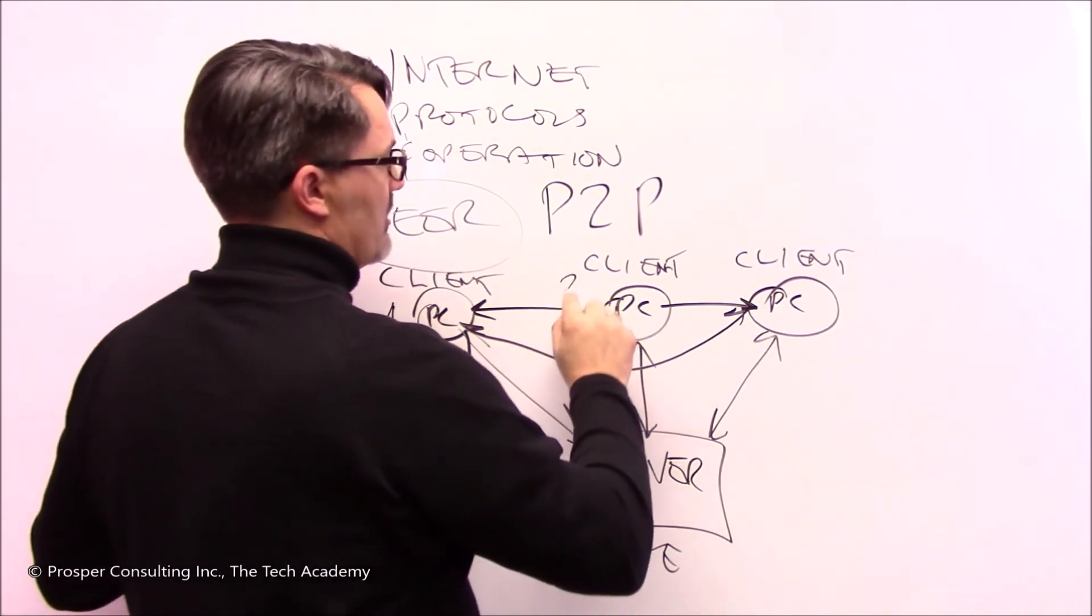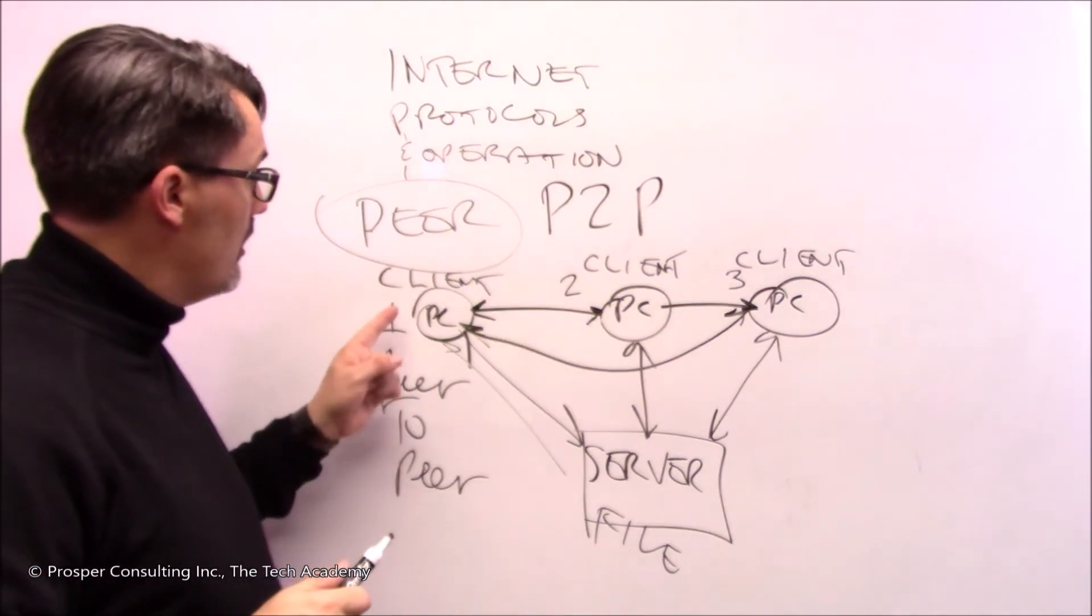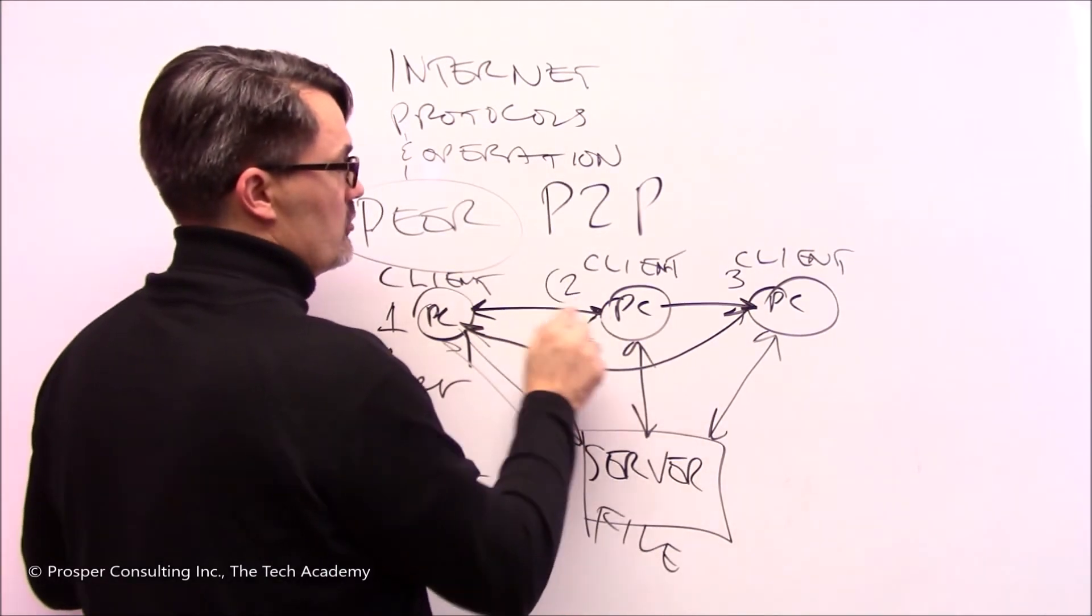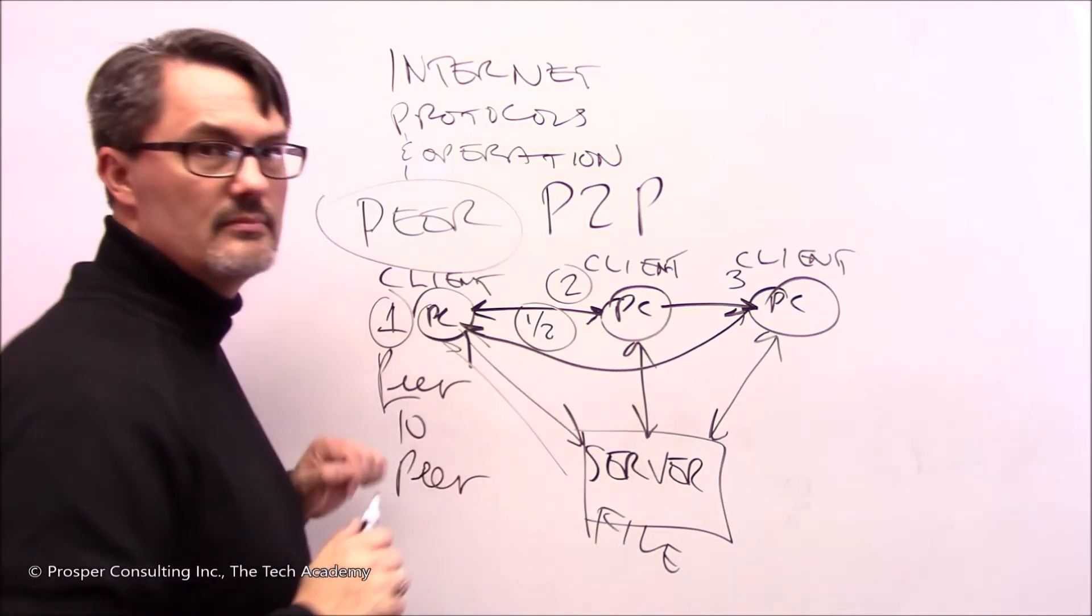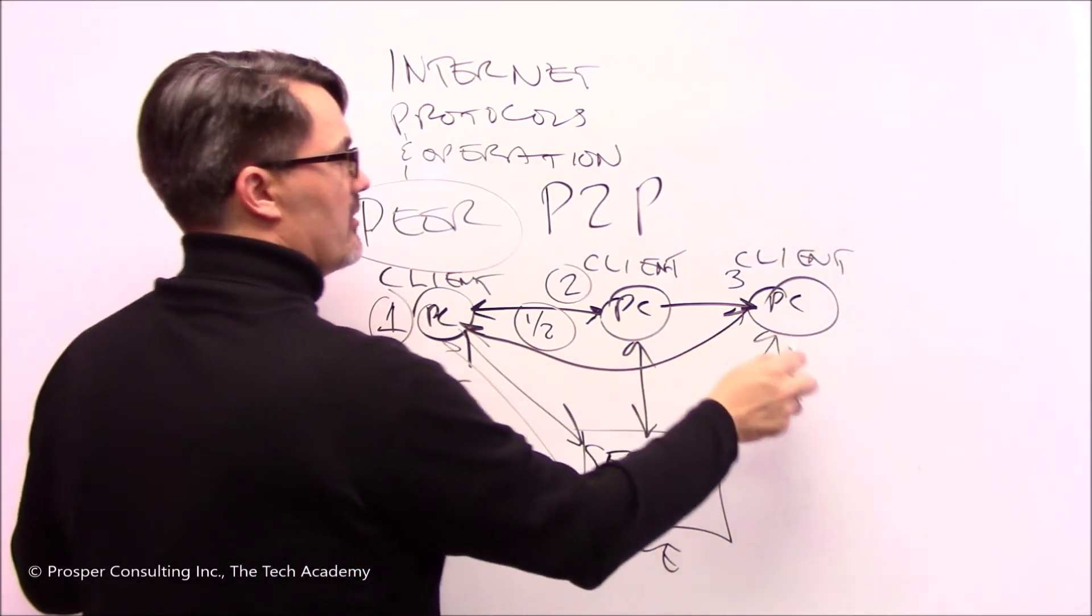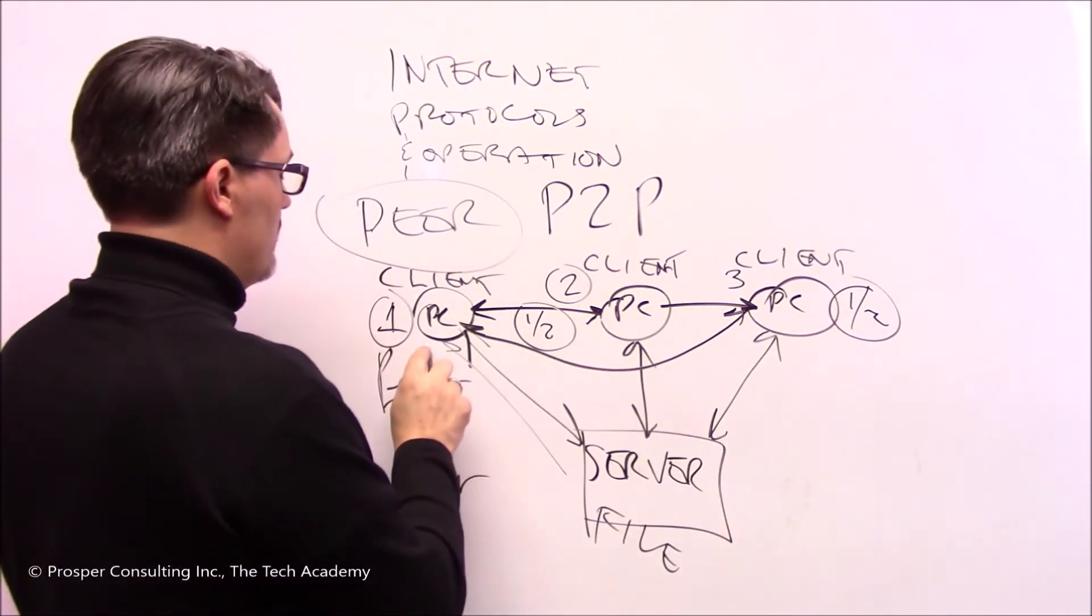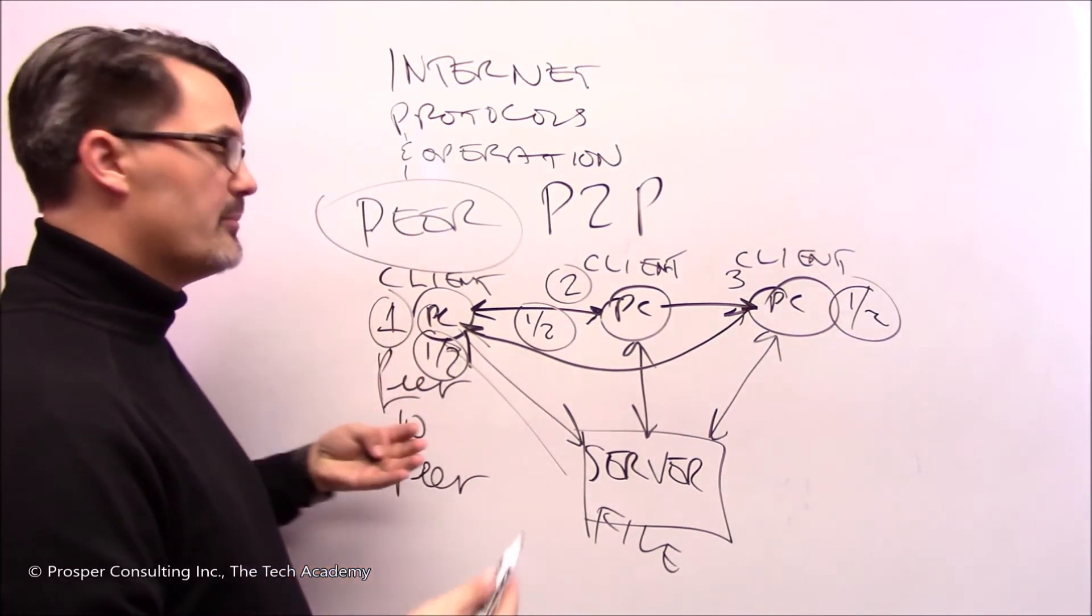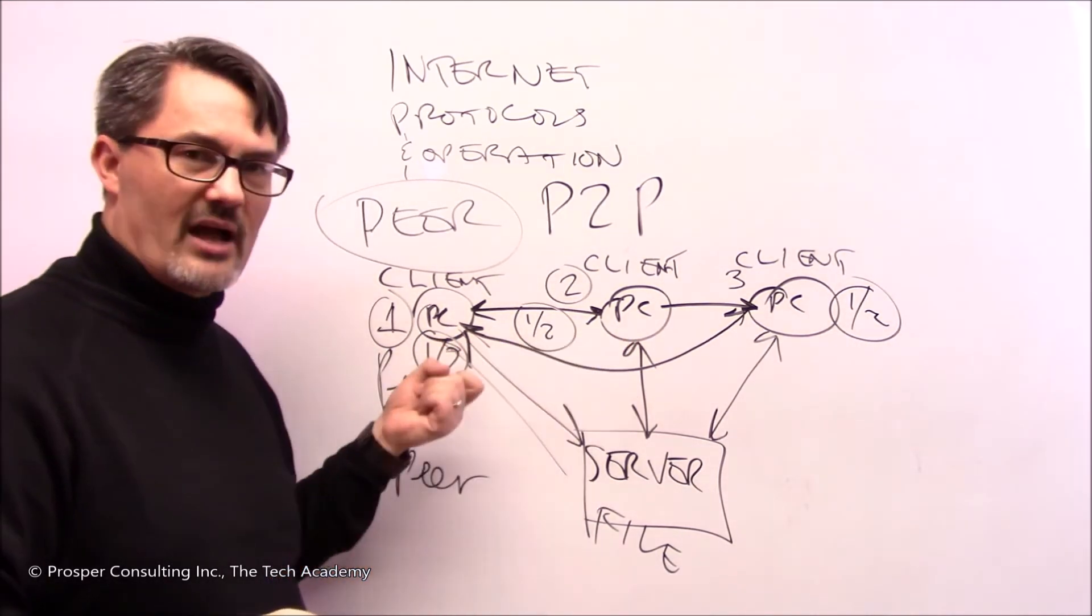Computer one could issue a request to computer two for the first half of the file, and it could issue a request to computer three for the second half of the file. Once both parts one and two are on that computer, they can be combined and you have the entire file. You just cut the transfer time for that data in half.